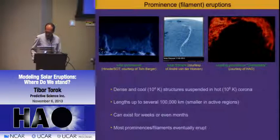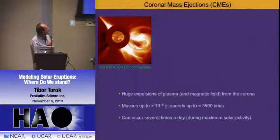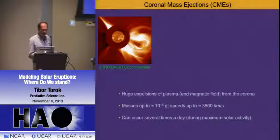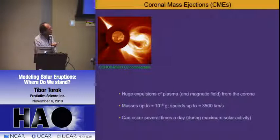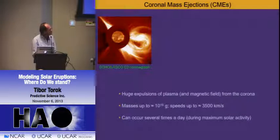Finally, we have CMEs—coronal mass ejections—which are huge expulsions of plasma and magnetic field from the corona. They can reach masses of up to 10 billion tons. The fastest one found was about 3,500 km/s peak speed. During especially active periods, you can have several of them a day.